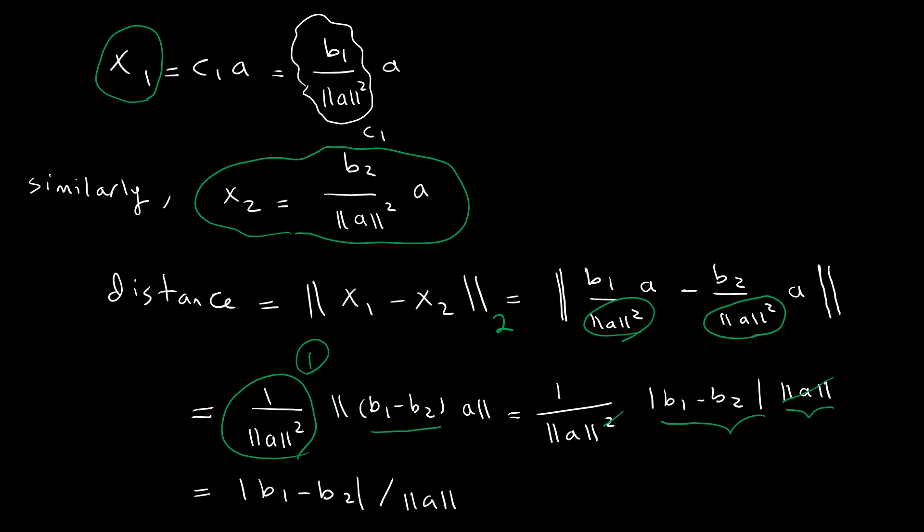I can cancel the norm of a terms to get |b1 - b2| / ||a||. The norm of a cannot be zero because otherwise this would not be a hyperplane. So we found the distance as the absolute value of the difference between b1 and b2 over the norm of the normal vector.